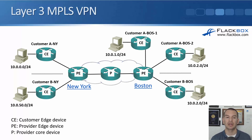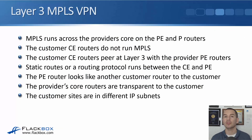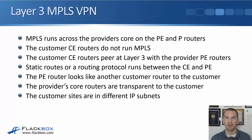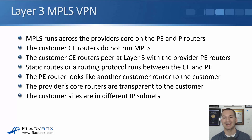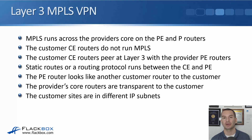This is a VPN technology because multiple customers go over the same shared network, and it's Layer 3 because each site is in a different IP subnet. When using Layer 3 MPLS VPN, MPLS runs across the provider's core on the PE and P routers. The customer CE routers do not run MPLS — they don't know anything about MPLS and are configured as normal IP routers. The CE routers peer at Layer 3 with the provider PE routers. Static routes or a routing protocol run between the CE and the PE, and the PE router looks just like another customer router to the customer. The provider's core routers are transparent to the customer.